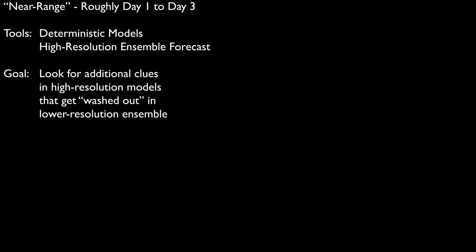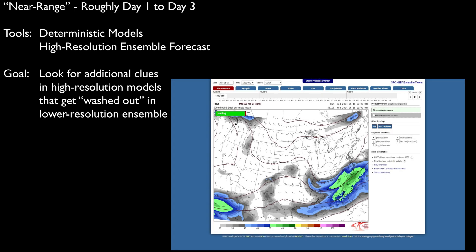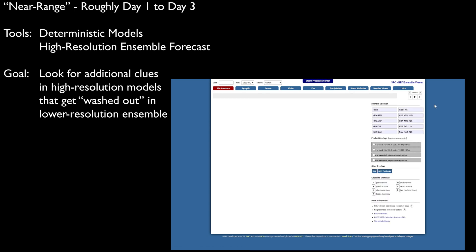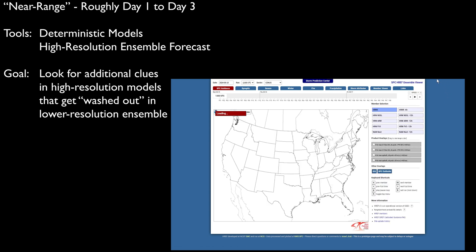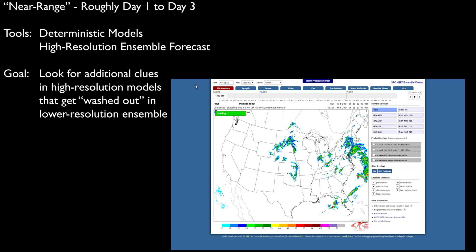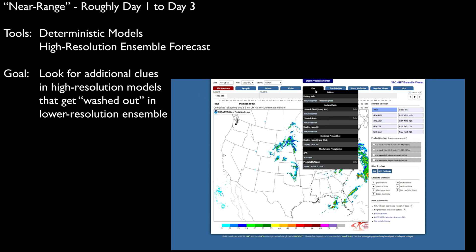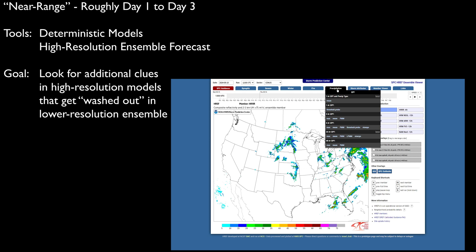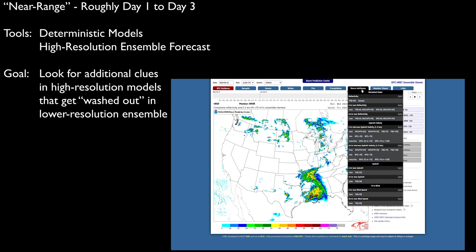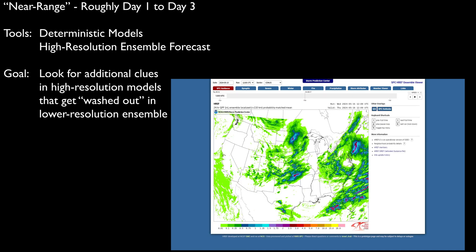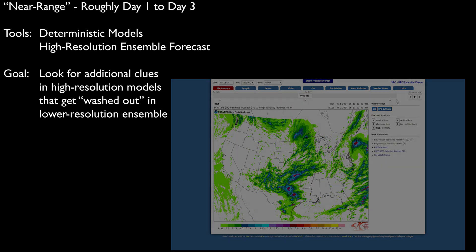With the HREF, you can get probabilistic guidance on a more narrow scope of models — all the convection-allowing models. Although more limited in scope, focusing on severe, winter, fire, and hydrologic fields, you can still gain an overall view of what the models contributing to the HREF are showing. The HREF is available in several places: on the SPC webpage, on a WPC webpage, and in DESI.